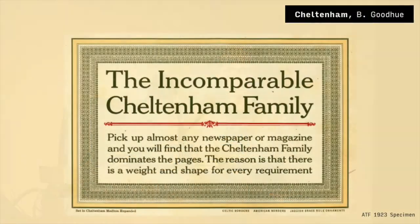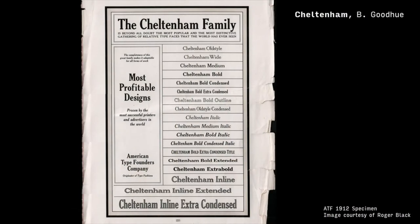But you also start to see families like Cheltenham develop, where the intent of the family is to be big and flexible. You can see this not-so-humble brag about Cheltenham's ubiquity simply because it's a big family. At the time, this was a really big family. You start to see a progression of weights, a progression of widths, and italic variants not only for the text style but for the titling styles as well — all roped together under the Cheltenham banner.